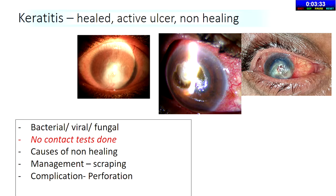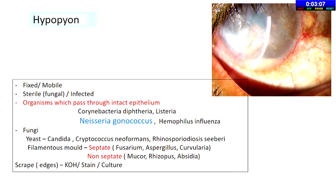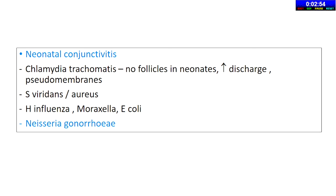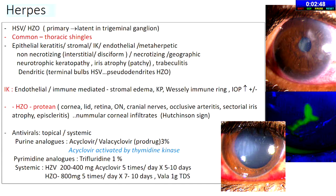For keratitis cases: you'll always get a healed case, never an active one. If you do get a rare active case, do not do contact test, tonometry, or sensations — tell the examiner you didn't do it because of the active ulcer; that gives you brownie points. Viva will go on non-healing ulcers, complications, perforations, and hypopyon. In a spotter, questions go on which organisms pass through intact epithelium and types of fungi or viruses infecting the eye.